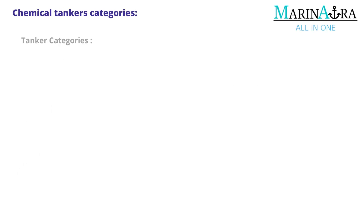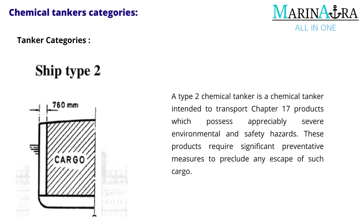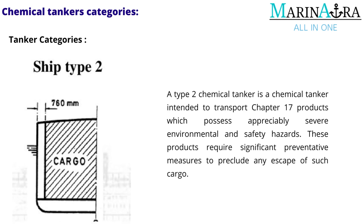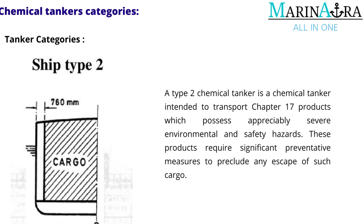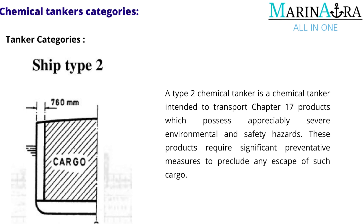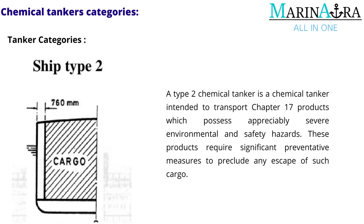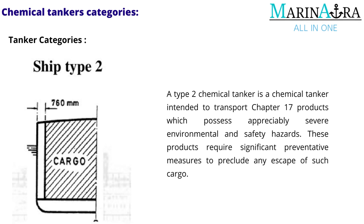A type 2 chemical tanker is intended to transport Chapter 17 products which possess appreciably severe environmental and safety hazards. These products require significant preventative measures to preclude any escape of such cargo.